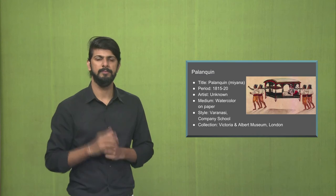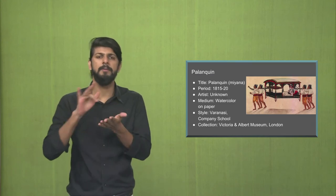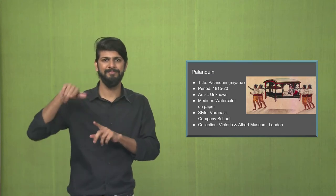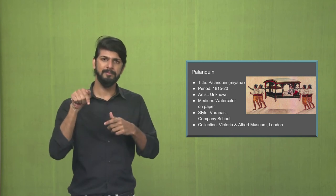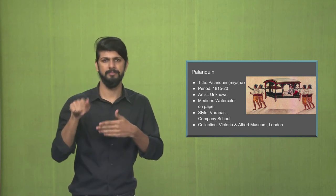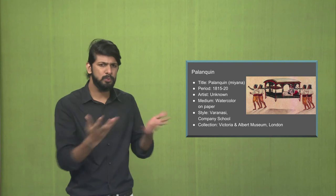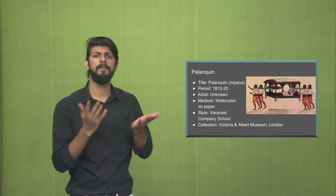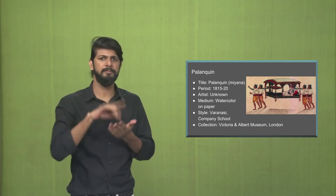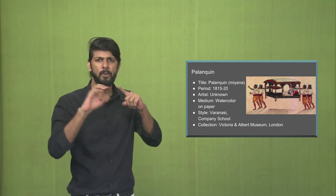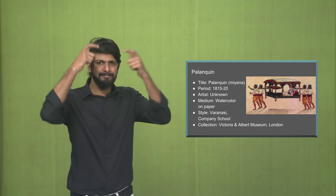This is the third painting. You can see a noble man sitting inside the palanquin. This painting is from the Varanasi company school. That is the style. Varanasi is a city in Uttar Pradesh. This painting is now displayed at the Victoria and Albert Museum in London.